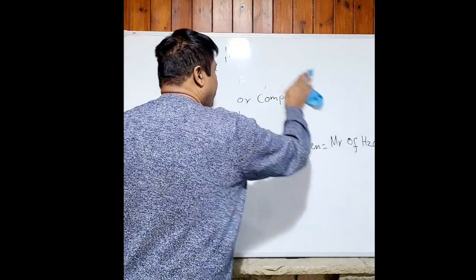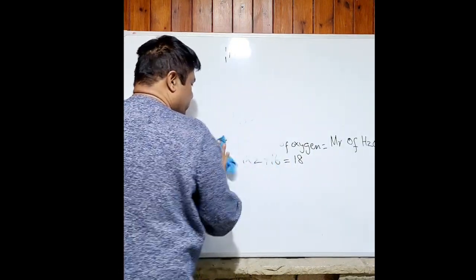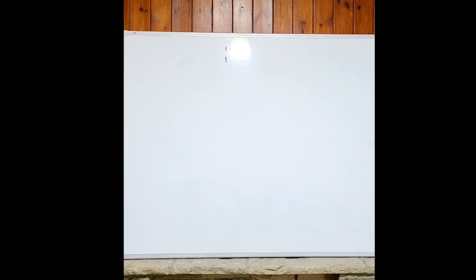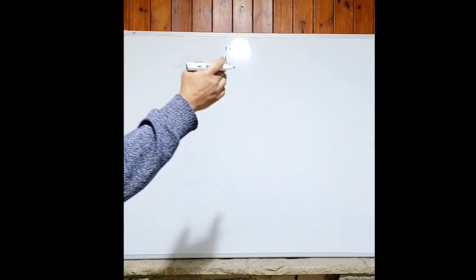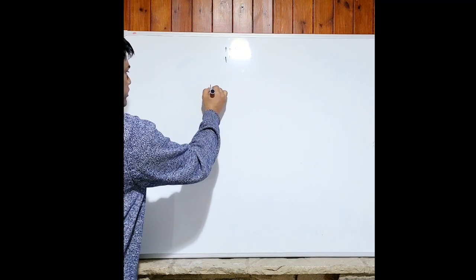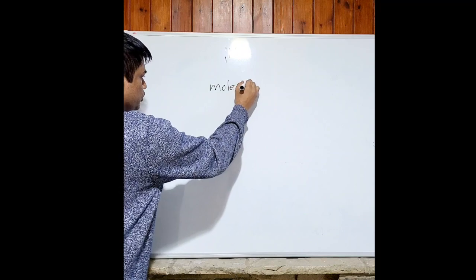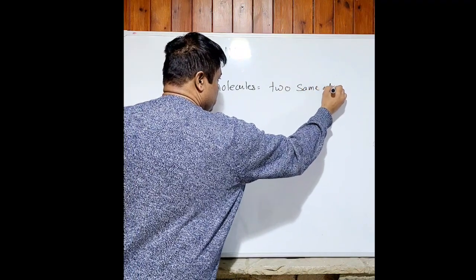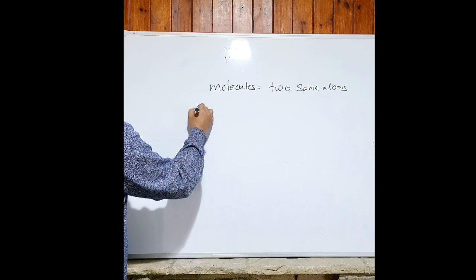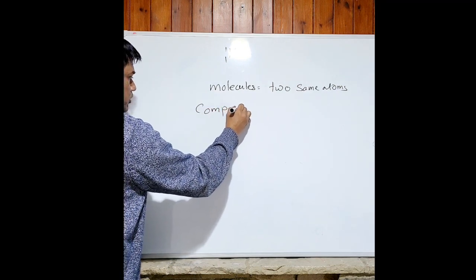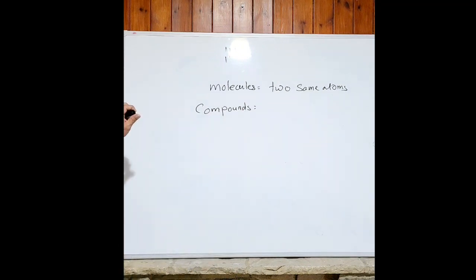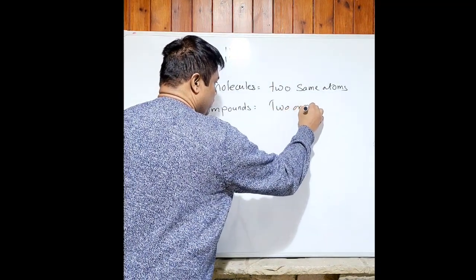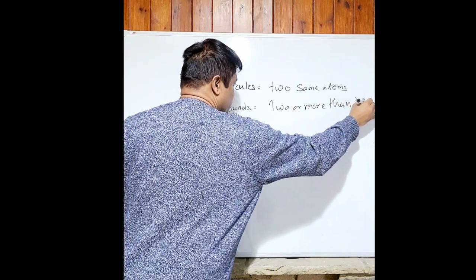Now let's work out the Mr of glucose. Glucose is a compound — a compound has two or more different atoms. Let's clarify: a molecule equals two of the same atoms bonded together, whereas a compound contains two or more atoms, which may be the same or different.